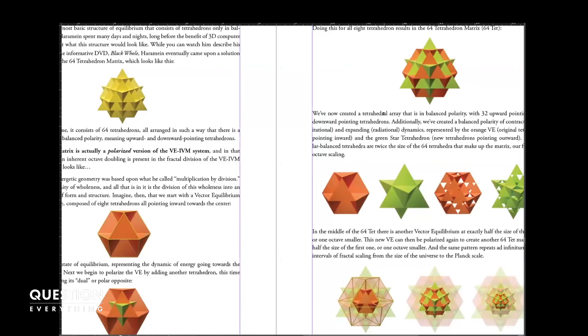The pure IVM field is unpolarized. It's non-manifest. The VE and the IVM is the condition of energy when it's not manifest. There's no size, there's no space, there's no rotation, none of the things that we can observe in that state. When you polarize it, you get the 64.